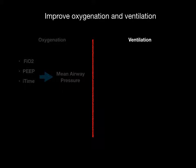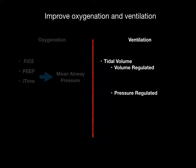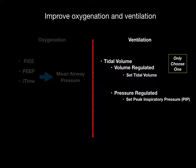Now let's go to the other side of the brick wall for ventilation. In ventilation, you can adjust the tidal volume, and this gets a little complicated because you can manage tidal volume in one of two ways: volume regulated or pressure regulated — and you can only choose one or the other. You can choose to set the tidal volume, or you can choose to set the peak inspiratory pressure, often referred to as PIP.